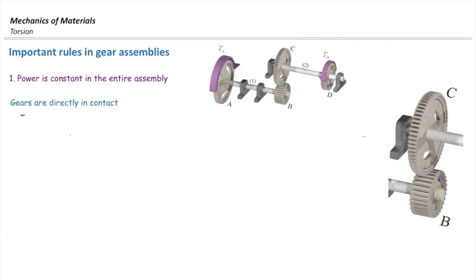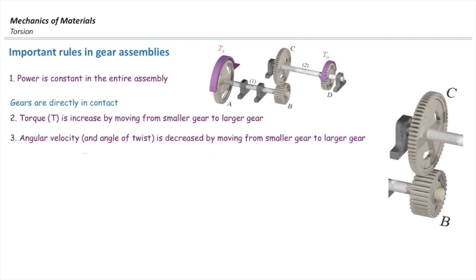Rule number two simply says torque increases by moving from smaller gear to larger gear. And that's the way that we can determine what is the appropriate gear ratio for that. Opposite to that, the angular velocity is decreasing when we are moving from smaller gear to larger gear.